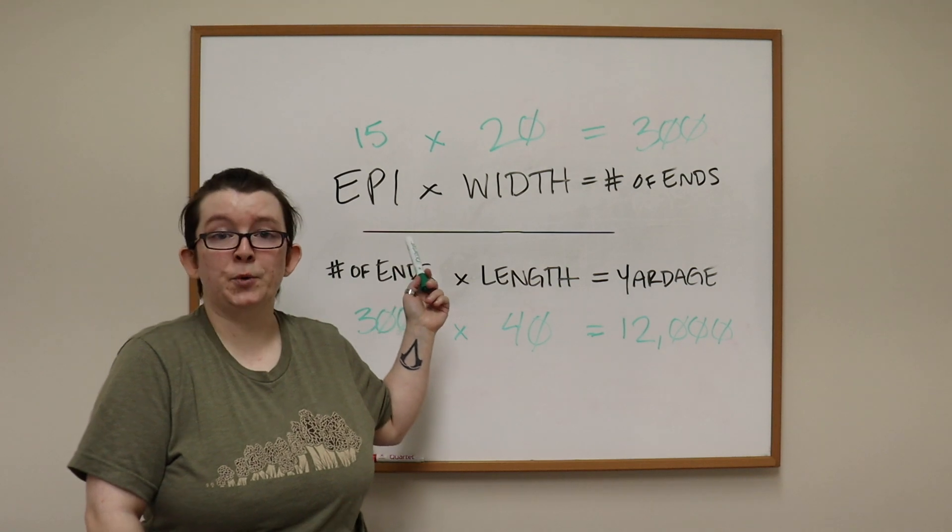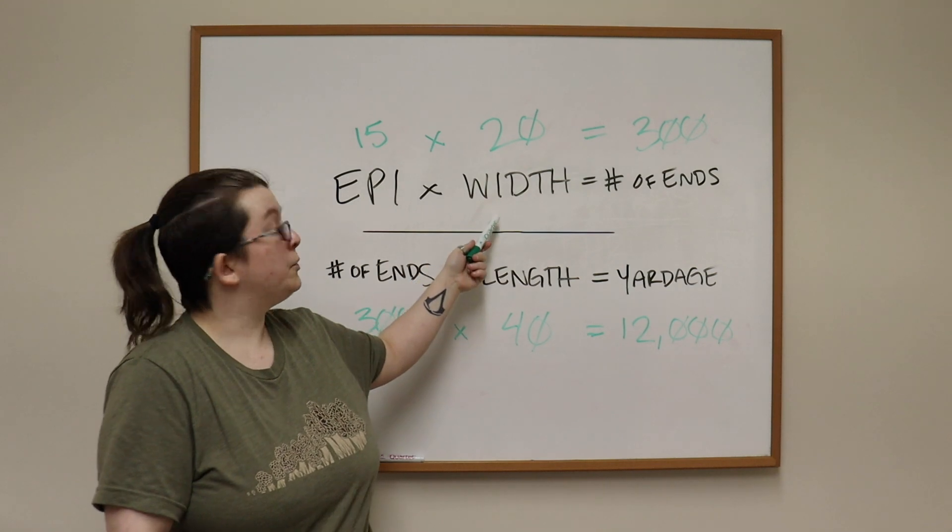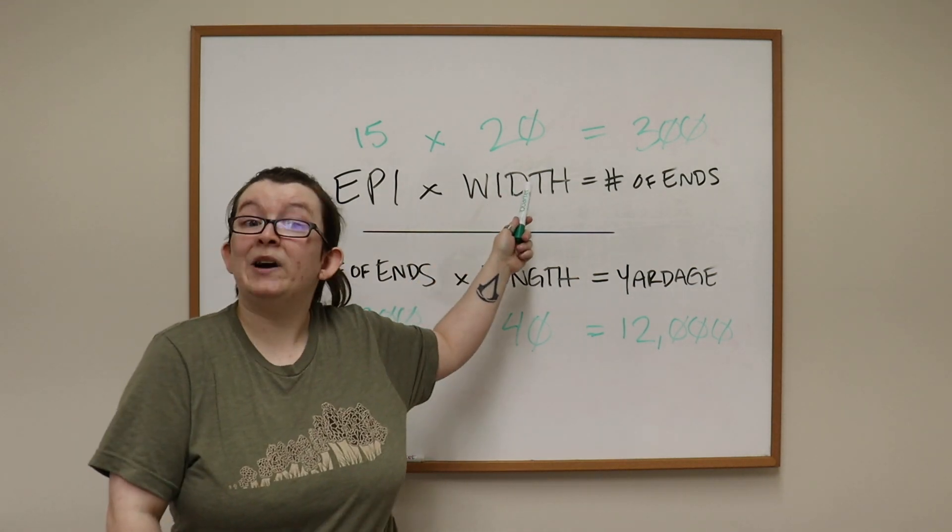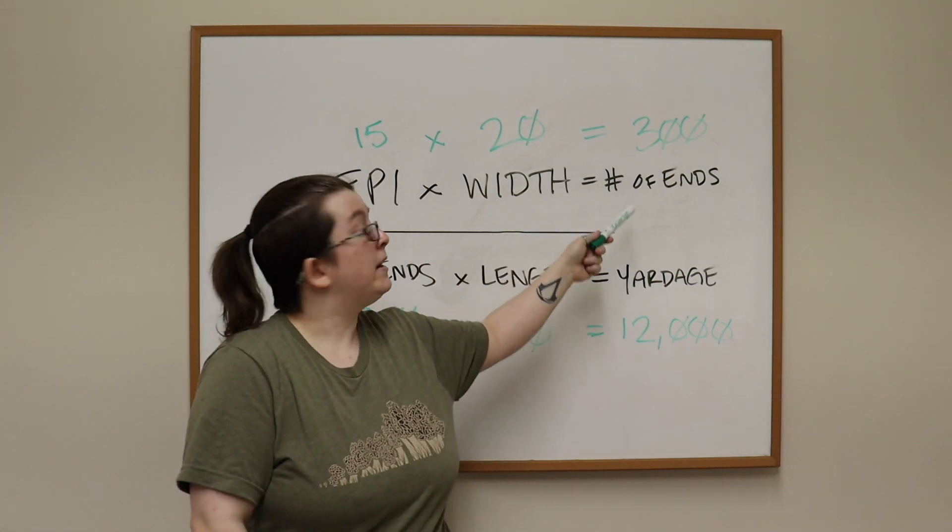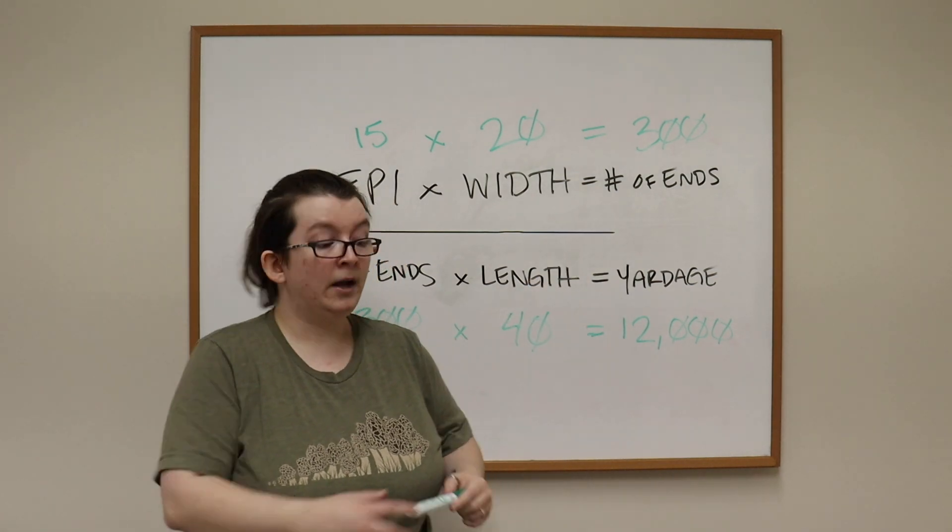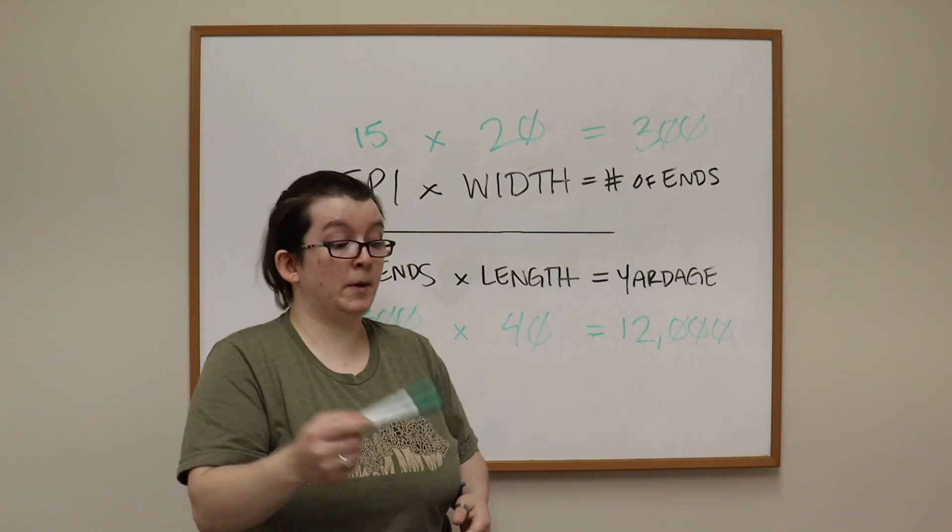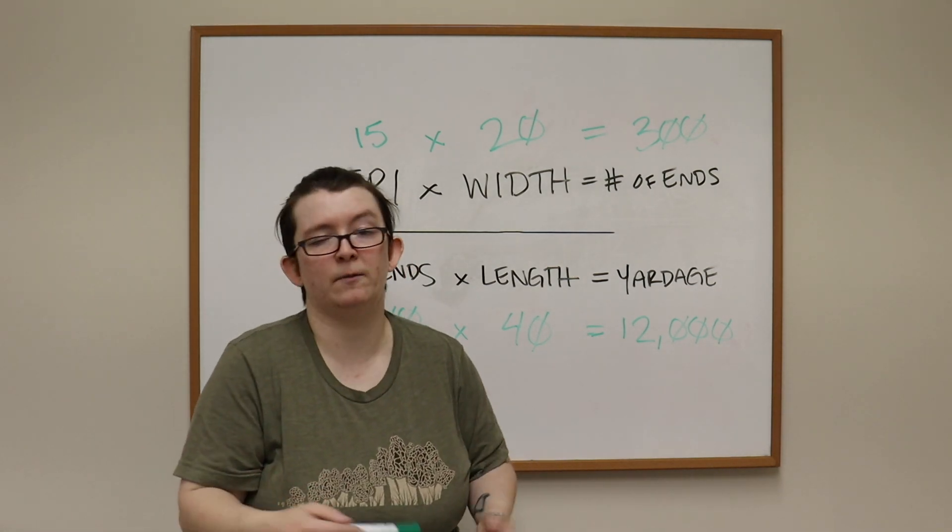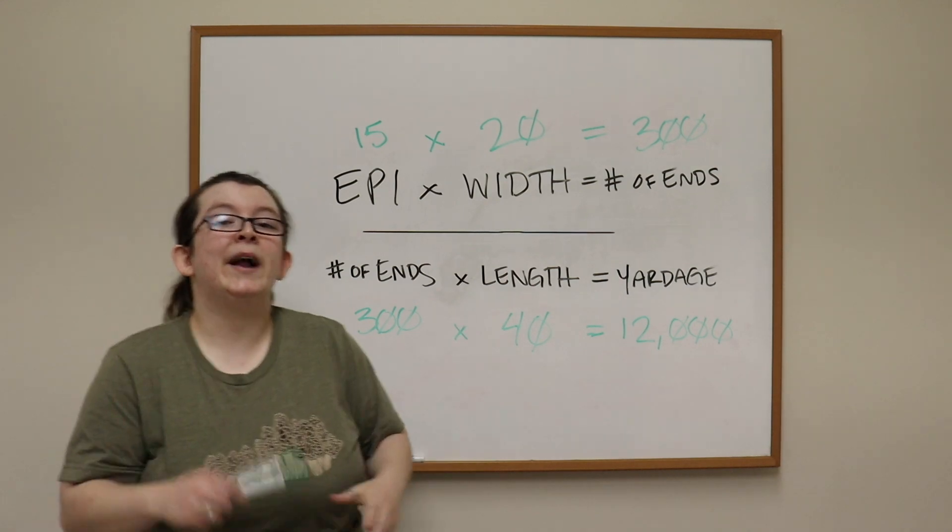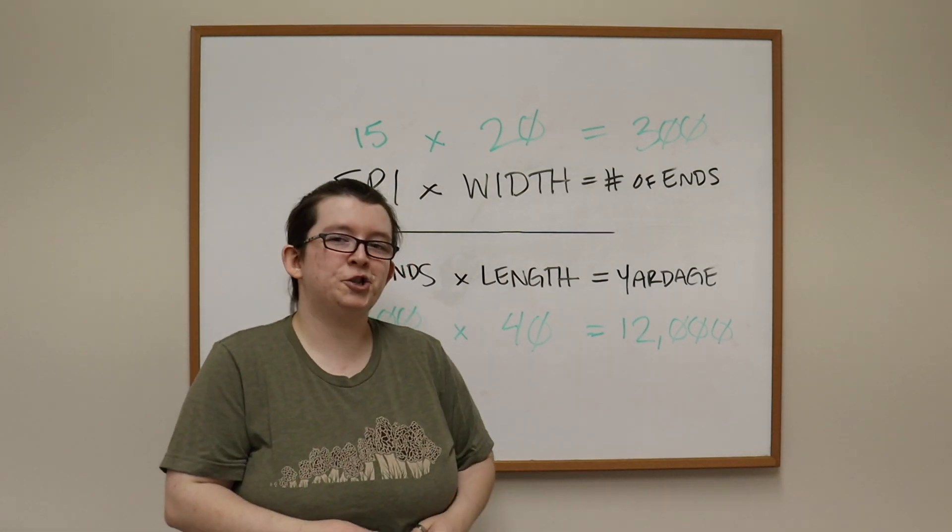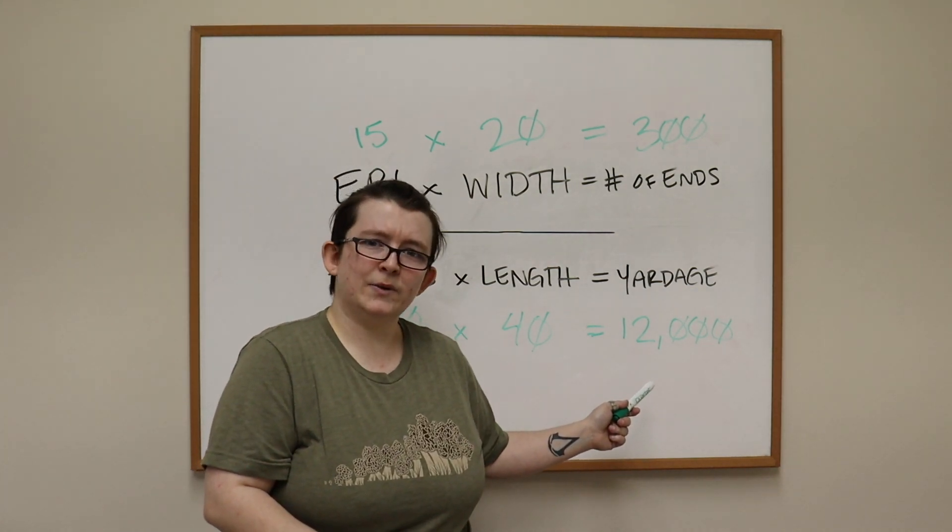I've already written them down, so let's go through them. We are looking at 15 ends per inch. So I probably have a 15 dent reed or a 15 dent heddle. We are going to do a width on the loom of 20 inches. And then of course we multiply these together like we were talking before, and we get the number of ends is 300. So again, if you were to count all the way across, if you were to warp this up just as it is and count all the way across, you would come up with 300 threads, ends, whatever. So we're going to take that number of 300, we're going to plug it in down here. And I've decided that I would like to do a 40 inch project.